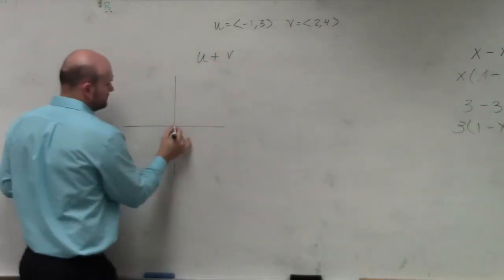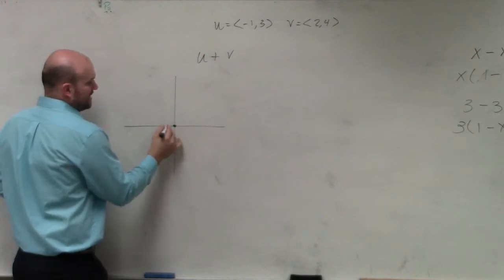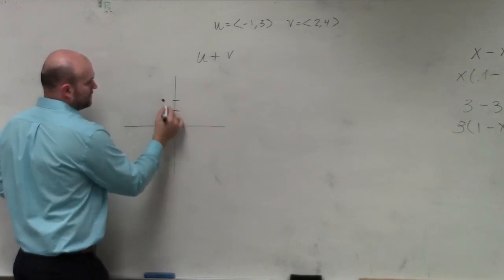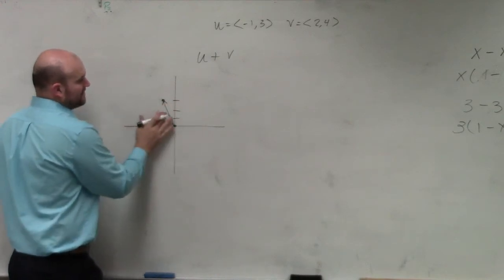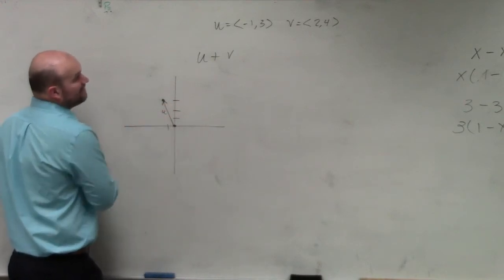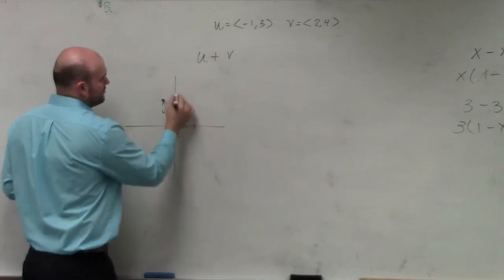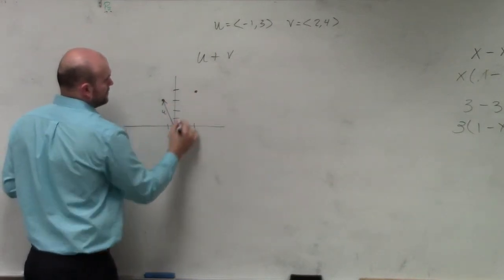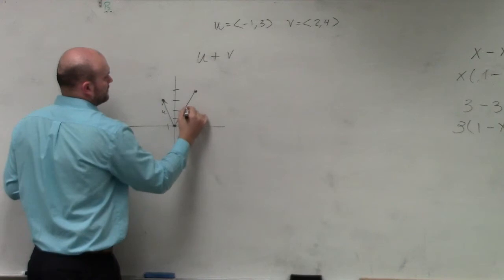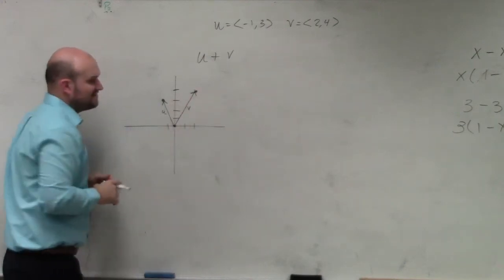So therefore, vector v is at negative 1, 1, 2, 3. That's vector v. I'm sorry, that's vector u. And vector v is at 1, 2, 4. That's vector v.